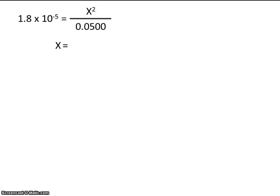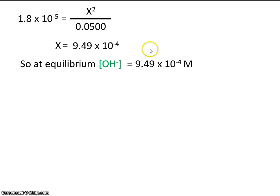Okay, when we solve for x, x comes out to be 9.49 times 10 to the minus 4th. So at equilibrium, remember, it's hydroxide ion concentration that we are finding. It will be this much. So at equilibrium, this is how much hydroxide we'll have.